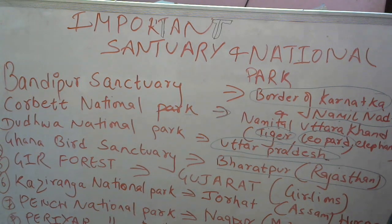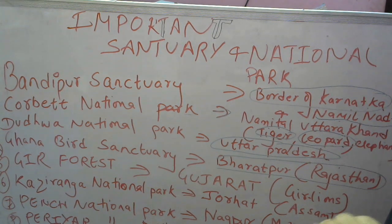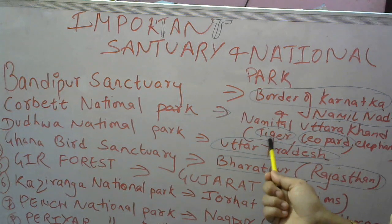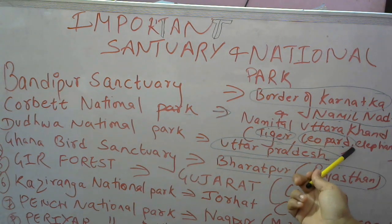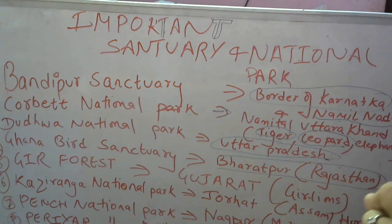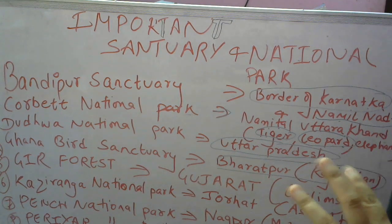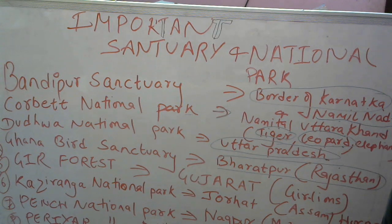Now, Corbett National Park is very well known — it is situated in Uttarakhand. Corbett National Park is found in Nainital, and it is famous for Tiger, Leopard, and Elephant. It is in Uttarakhand. Another important one is Rajaji National Park, which is also situated in Uttarakhand.